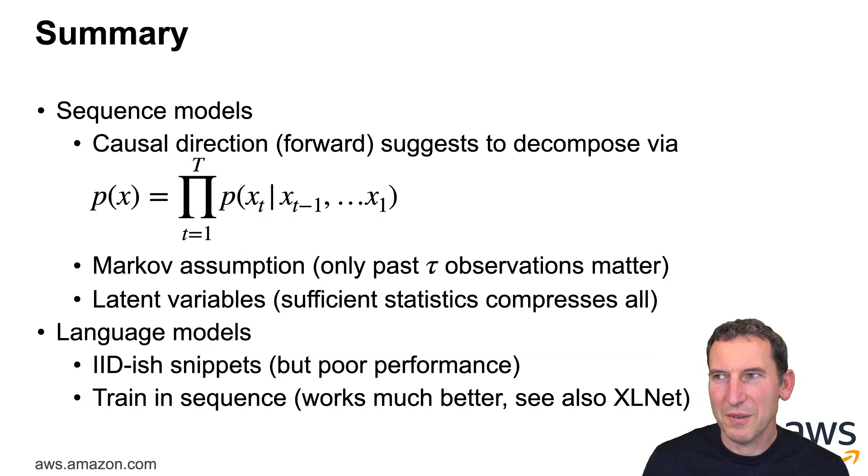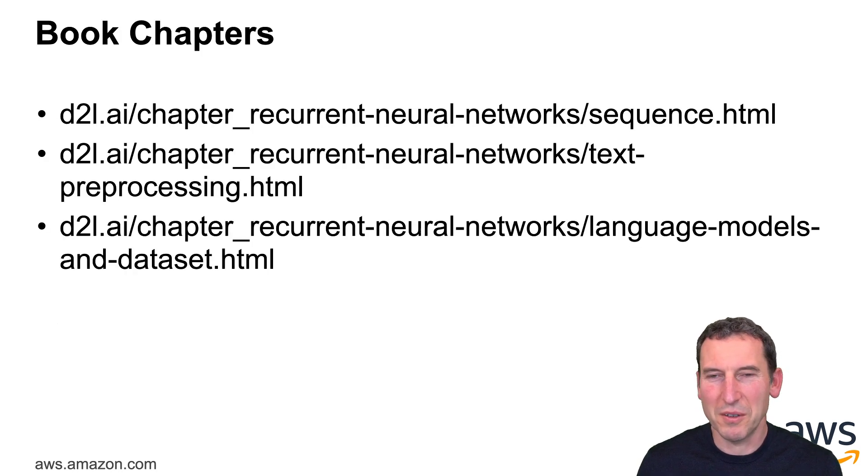Now as a result what I get therefore is sequence models where I want to have a causal direction in modeling. Maybe sometimes I want to use a Markovian assumption but actually it's much better to use latent variables and we'll get to that later. And then in the end we talked a little bit about how to actually build language models how to get some snippets and how to train things in larger sequences. So there's a lot more that you would need to know about this and I strongly recommend that you go and read the corresponding book chapters on RNNs and sequence models and text processing and language models in general.